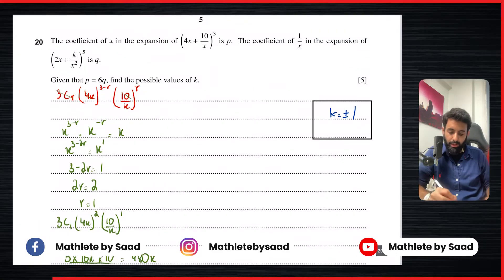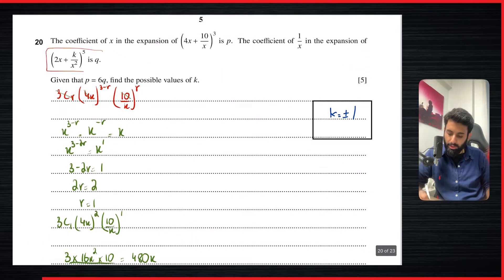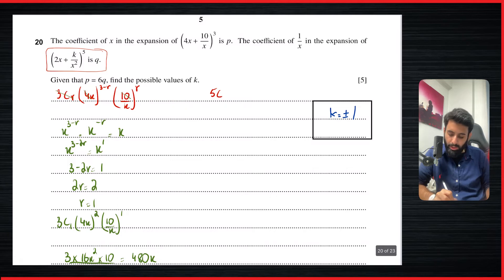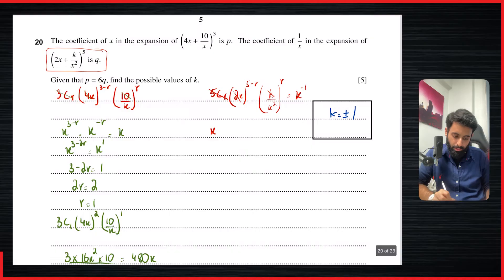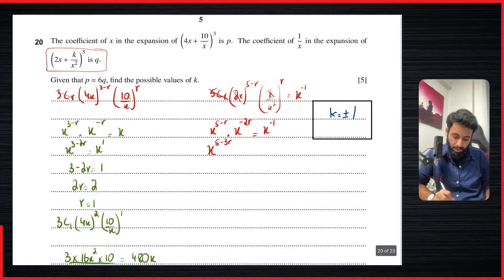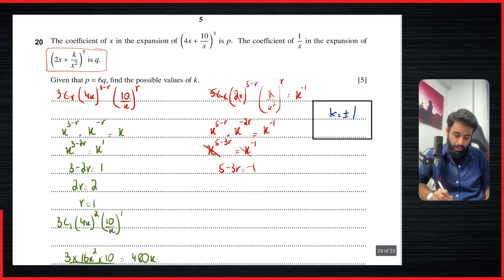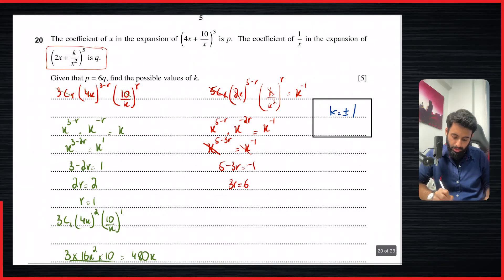Now we look at (2x + k/x²)^5 and find the coefficient of 1/x, i.e., x^(−1). The general term is 5Cr × (2x)^(5−r) × (k/x²)^r. Ignoring constants: x^(5−r) × x^(−2r) = x^(5−3r) = x^(−1). So 5 − 3r = −1, giving 3r = 6, therefore r = 2.